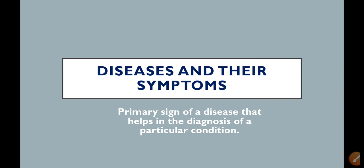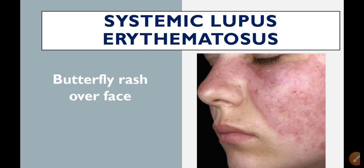The first disease and its primary symptom: systemic lupus erythematosus (SLE). The butterfly rash over the face is the primary symptom of SLE. It is an autoimmune disease. If a person with a butterfly rash over the face is seen, you can say it is likely SLE, but you should also notice other symptoms to confirm the diagnosis, as butterfly rash may sometimes just be acne in a butterfly shape.